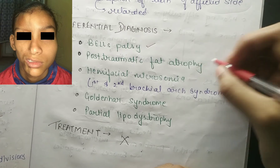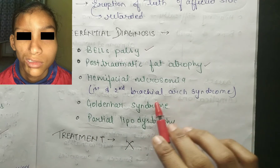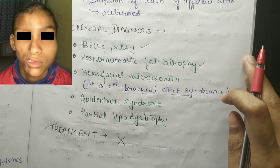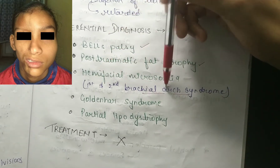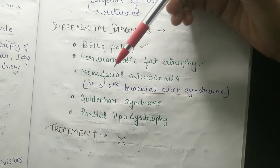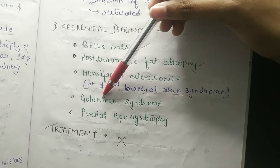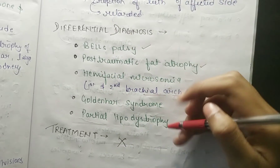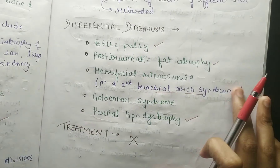Differential diagnoses include post-traumatic fat atrophy and hemifacial microsomia (first and second branchial arch syndrome). In hemifacial microsomia, the first and second branchial arches are involved, whereas in facial hemiatrophy the trigeminal nerve is involved. Goldenhar syndrome and partial lipodystrophy are also differential diagnoses.